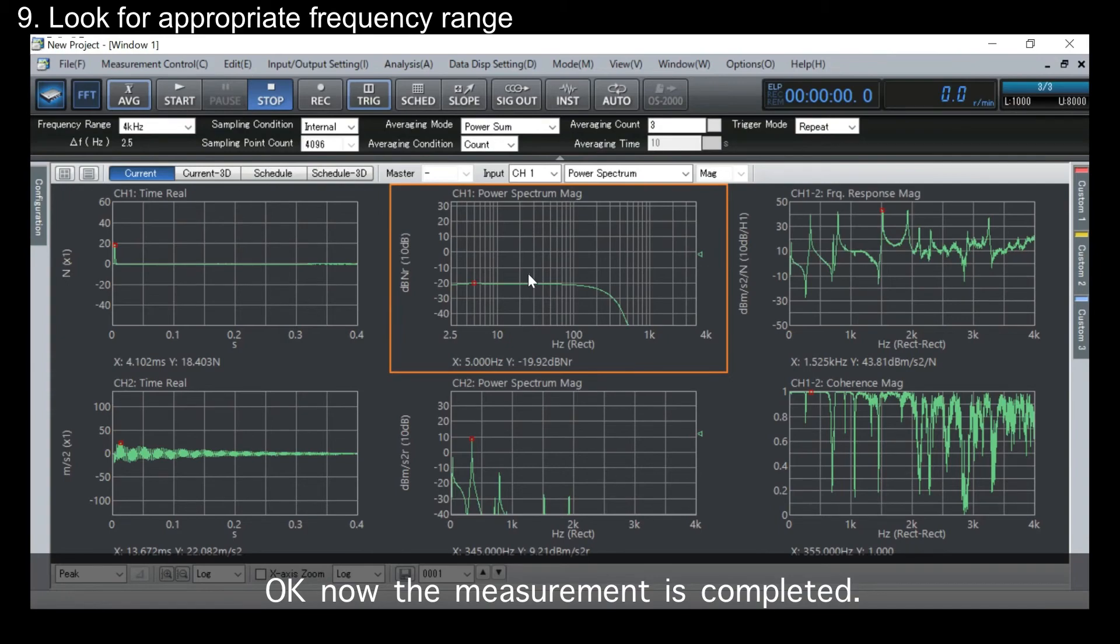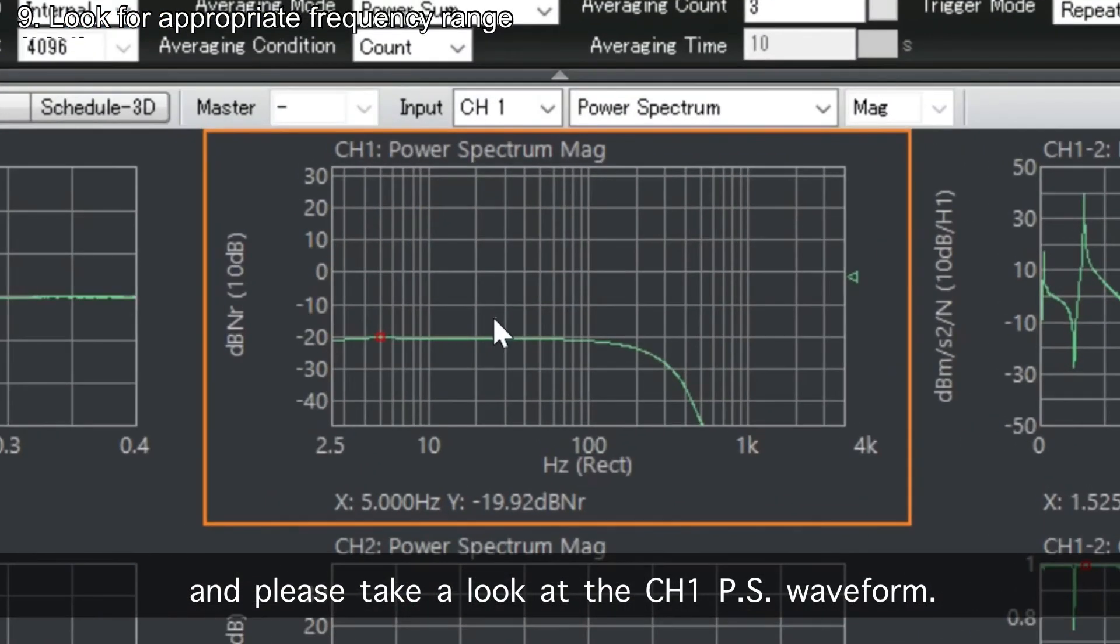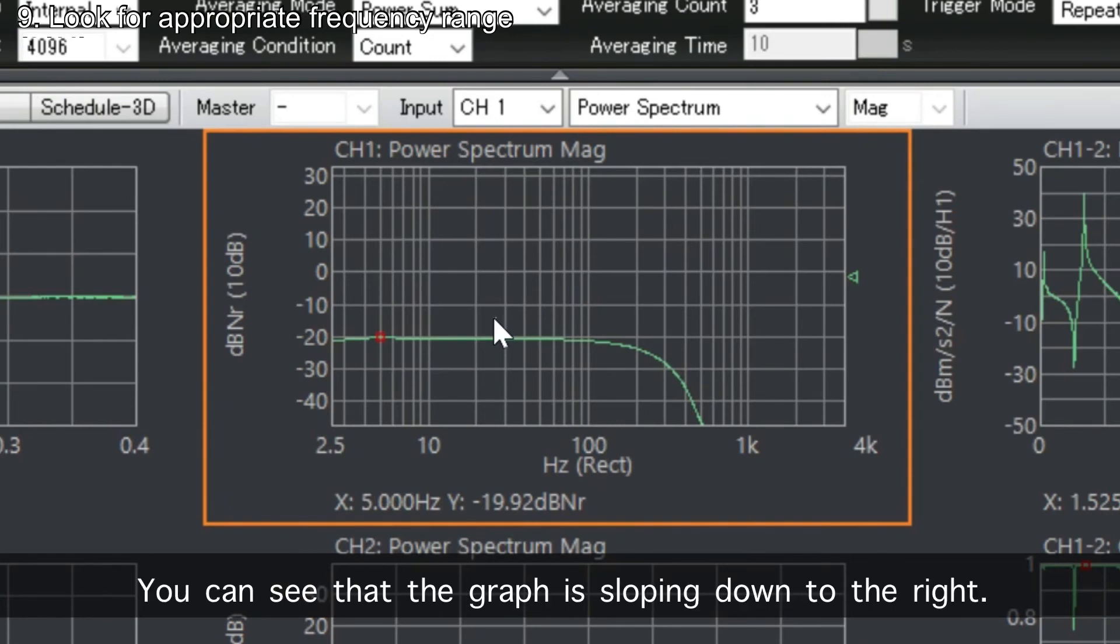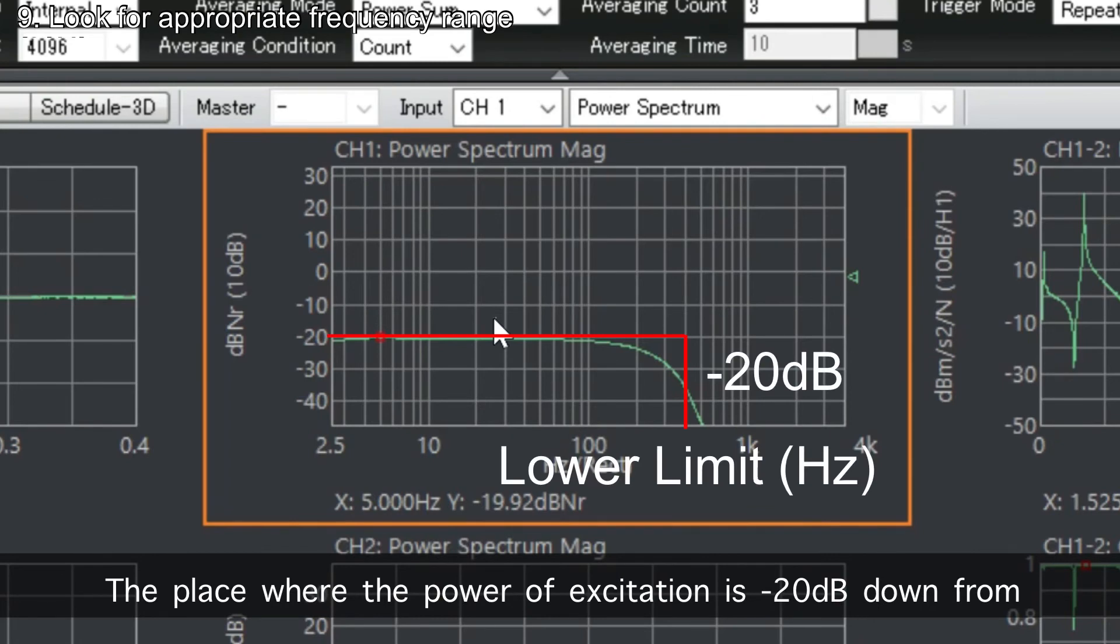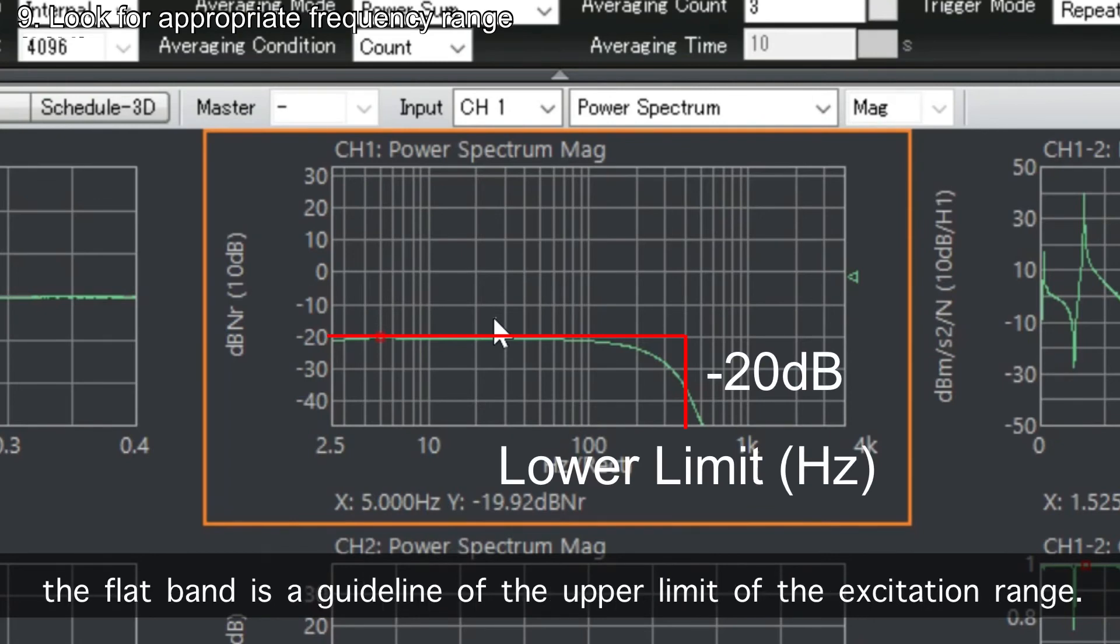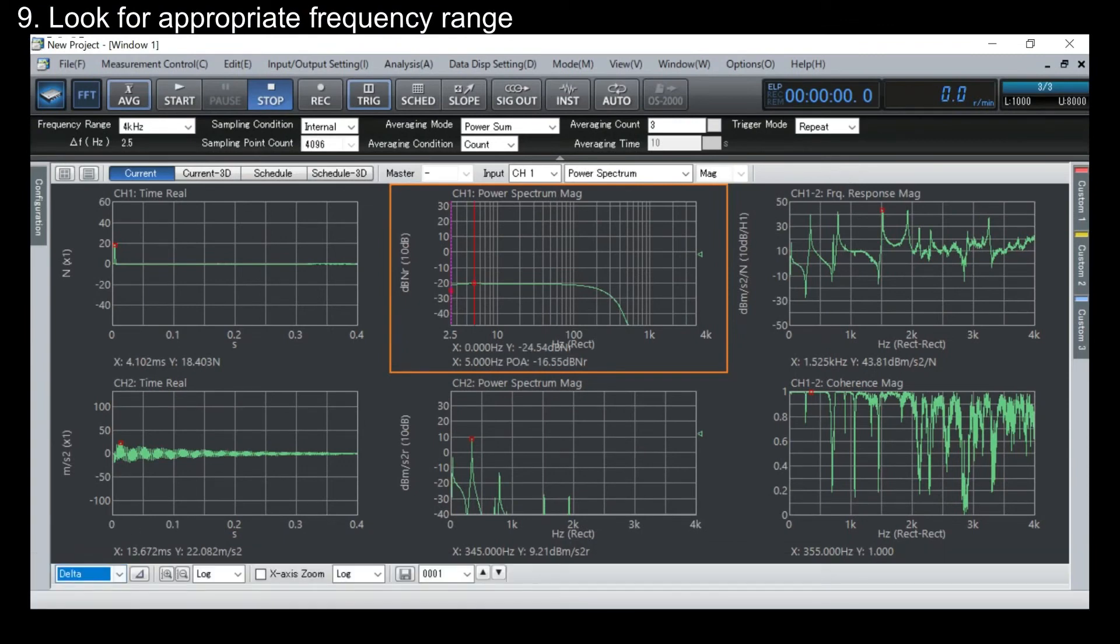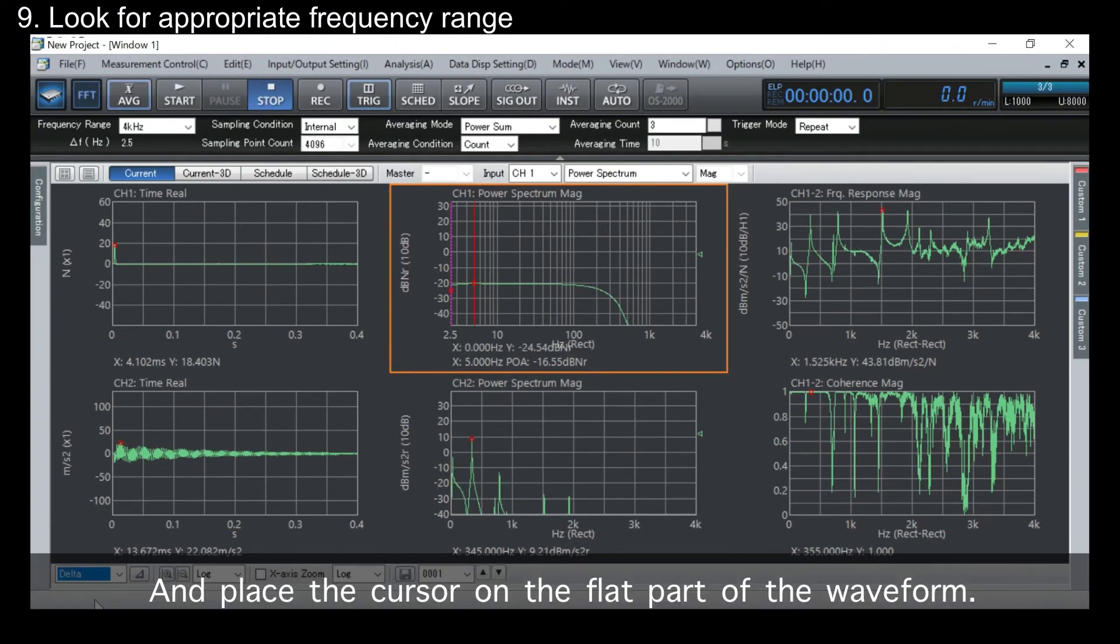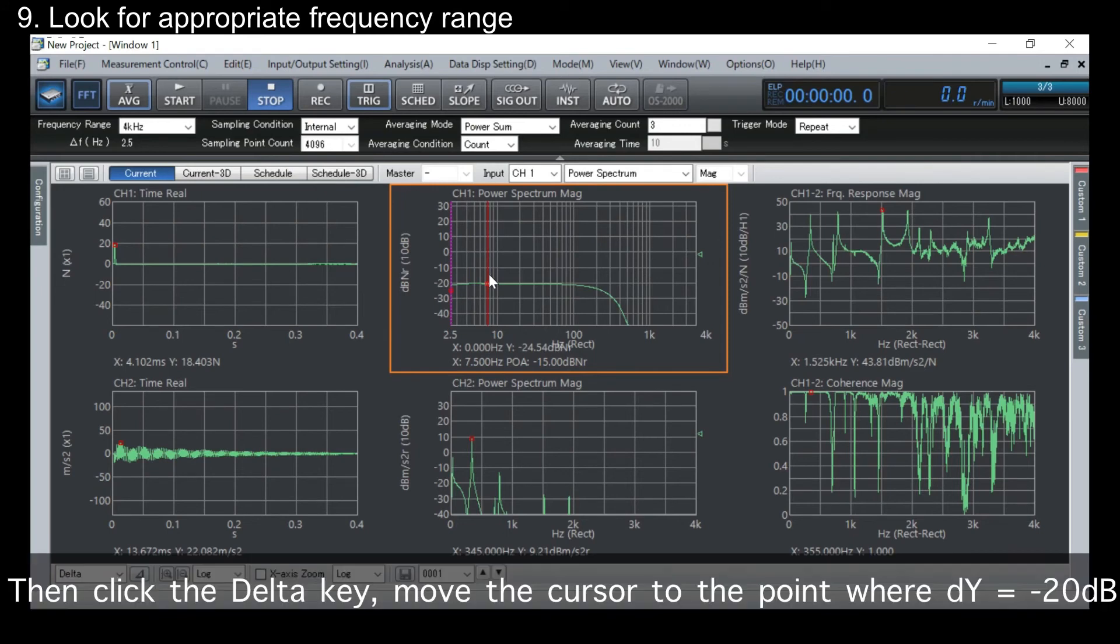Okay, now the measurement is completed. And please take a look at the channel 1 power spectrum waveform. You can see that the graph is sloping down to the right. The place where the power of excitation is minus 20 dB down from the flat band is the guideline of the upper limit of the excitation range. Select delta here. And place the cursor on the flat part of the waveform. Then, click the delta key. And move it to the point where dy becomes minus 20 dB.